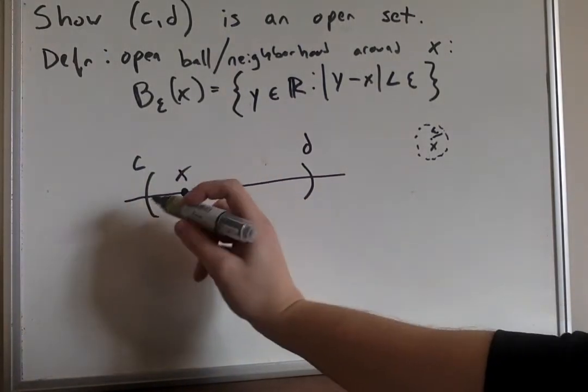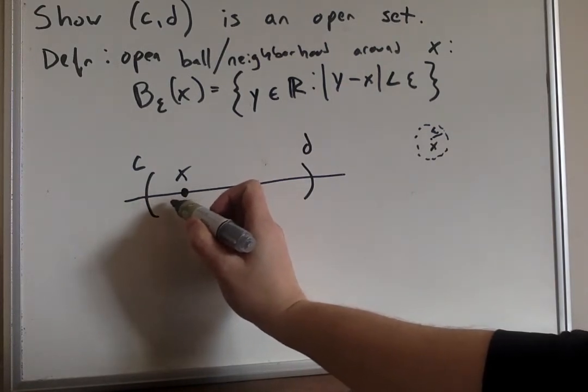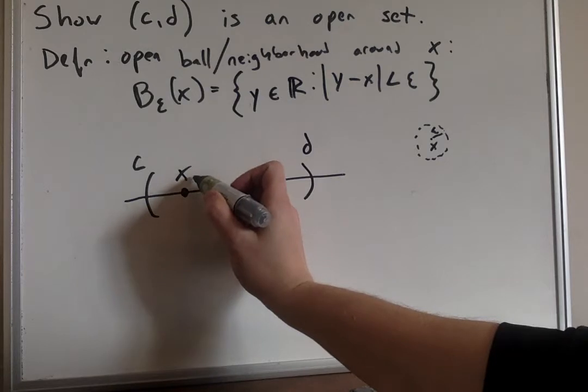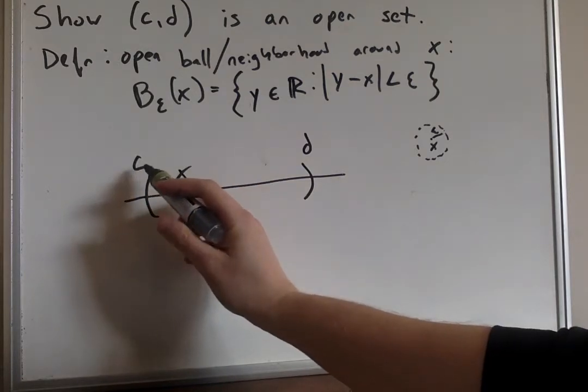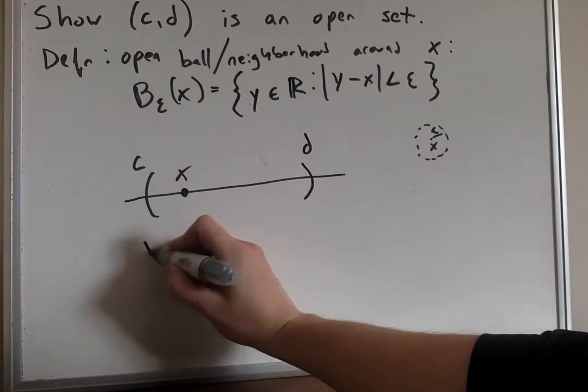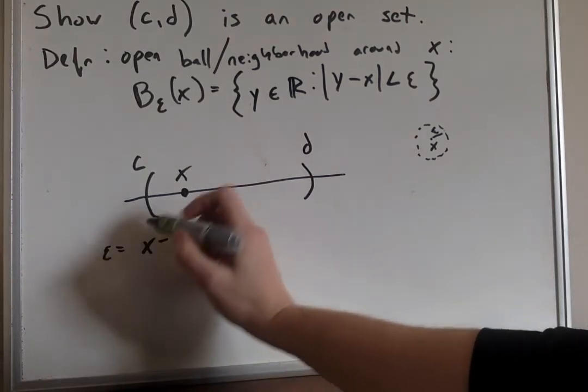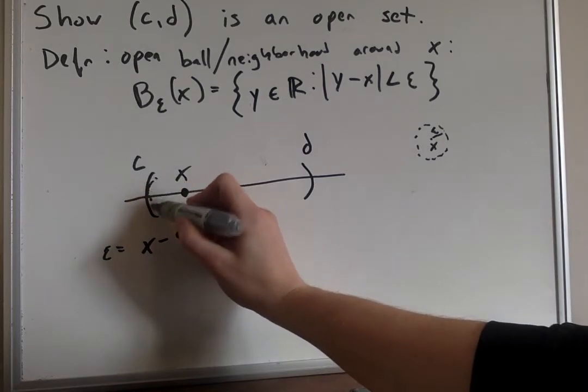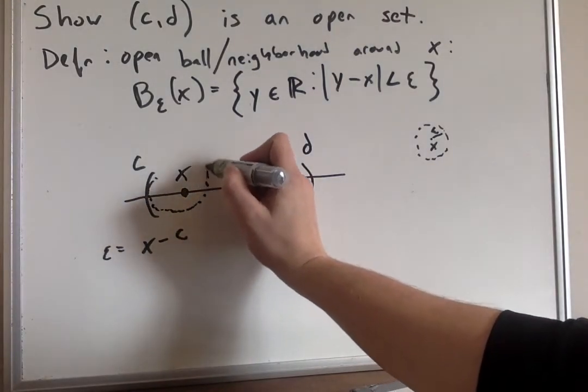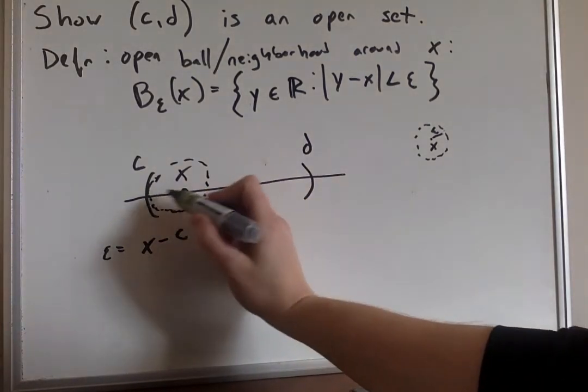Now, the thing to look at here, we want to consider the distance between x and one of the endpoints. So if we do here, x minus c as epsilon, then we would draw this line here. It should be a little more symmetrical, but that's going to be an epsilon distance from x.